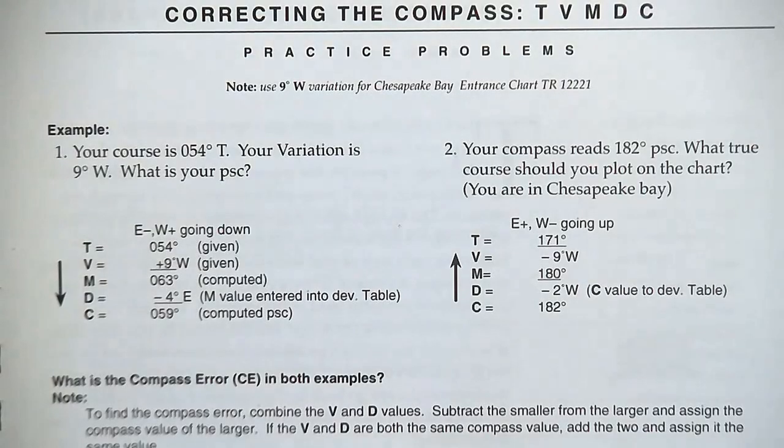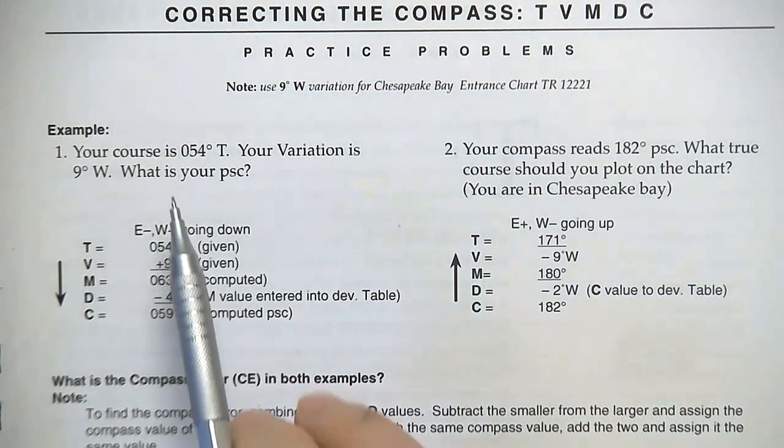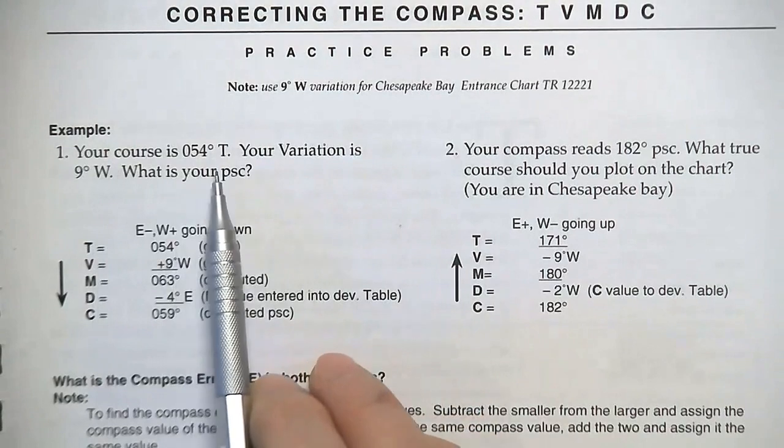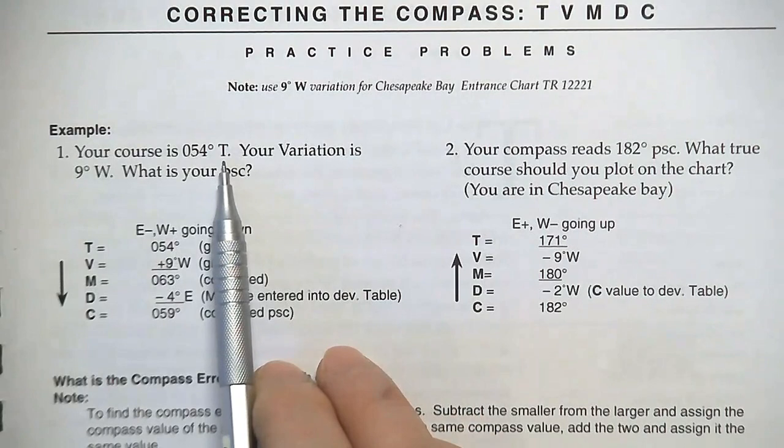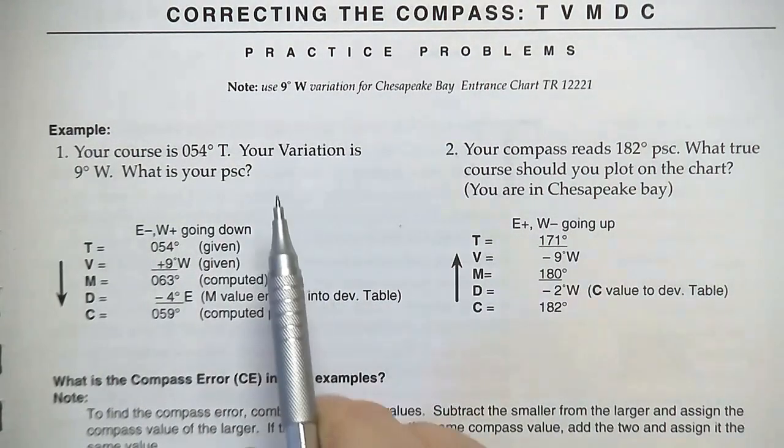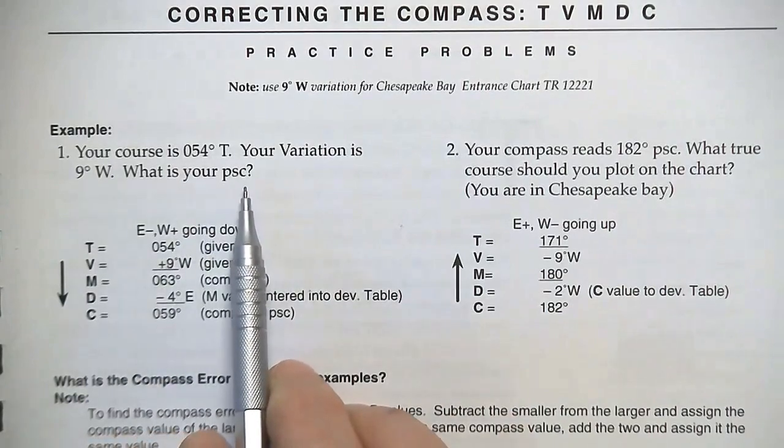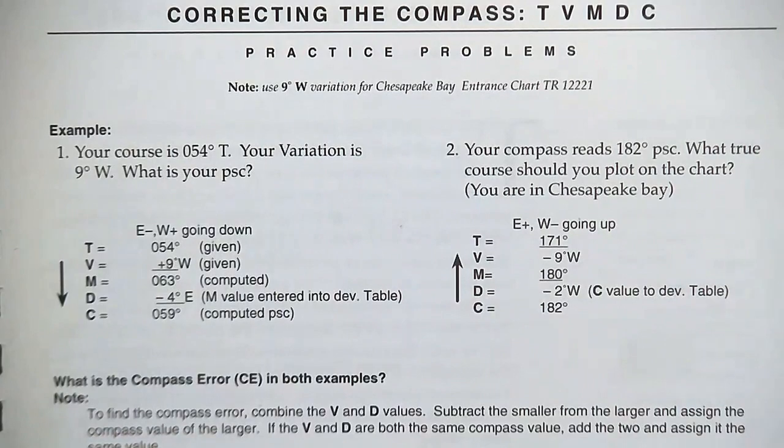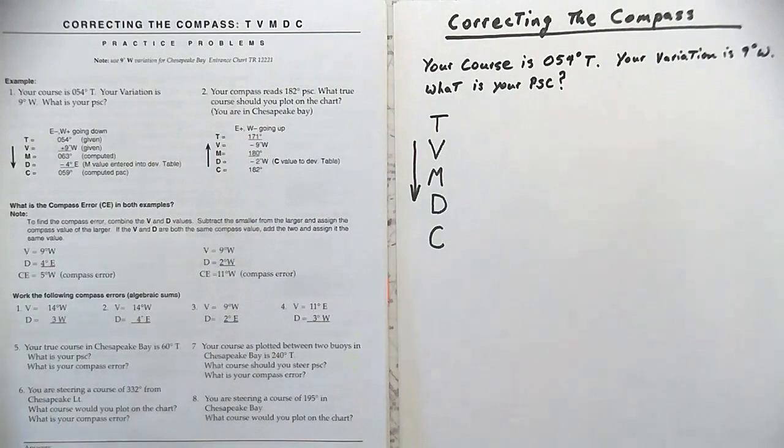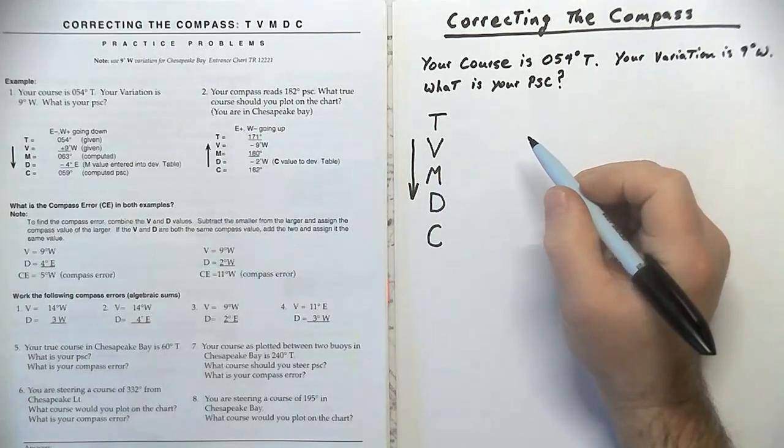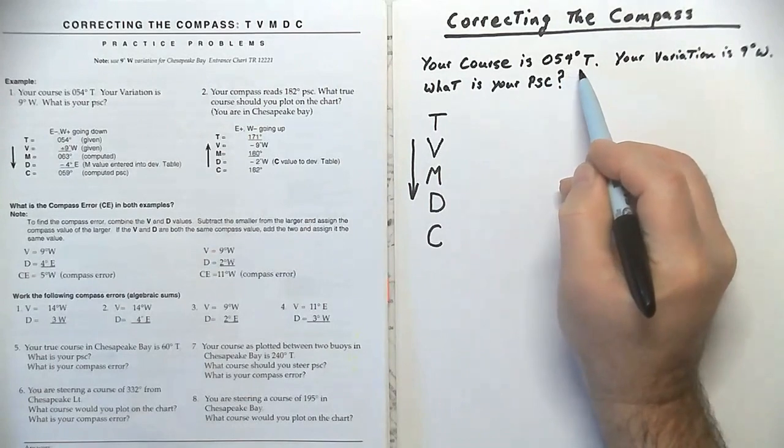Now let's dive into a problem. In most TVMDC problems, you will be given your course in either true or magnetic, in other words, a compass course. In this example, we will be using one that's taken off the chart noted by the T following the degrees. Again, for the purposes of these problems, the variation is fixed at 9 degrees west. And the problem is asking you to find your PSC, or in other words, what is your course to steer by compass? To solve these problems, we first start by drawing your TVMDC on a piece of scratch paper or in your course notebook. We then proceed to fill in the pieces of information that we have in a very neat and orderly fashion. Neatness will count. So our course is given as 54 degrees true.